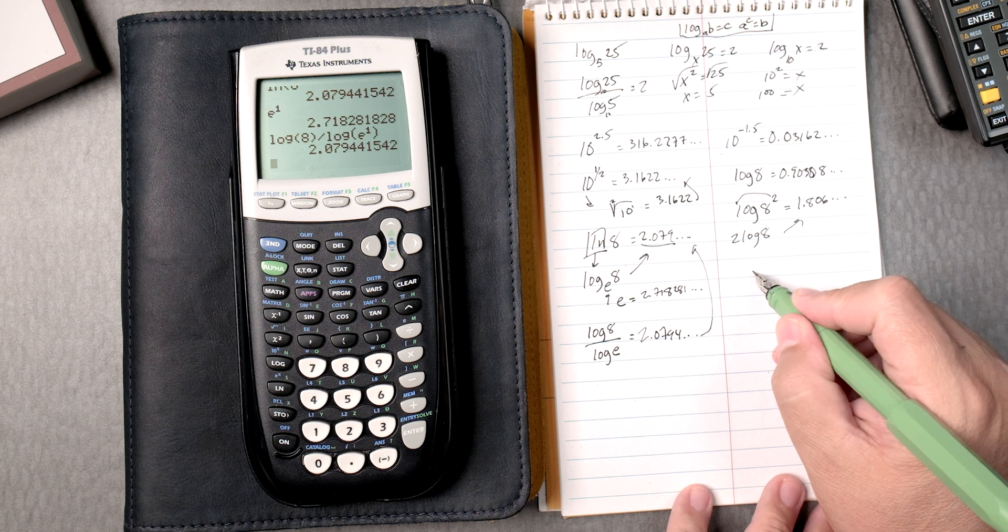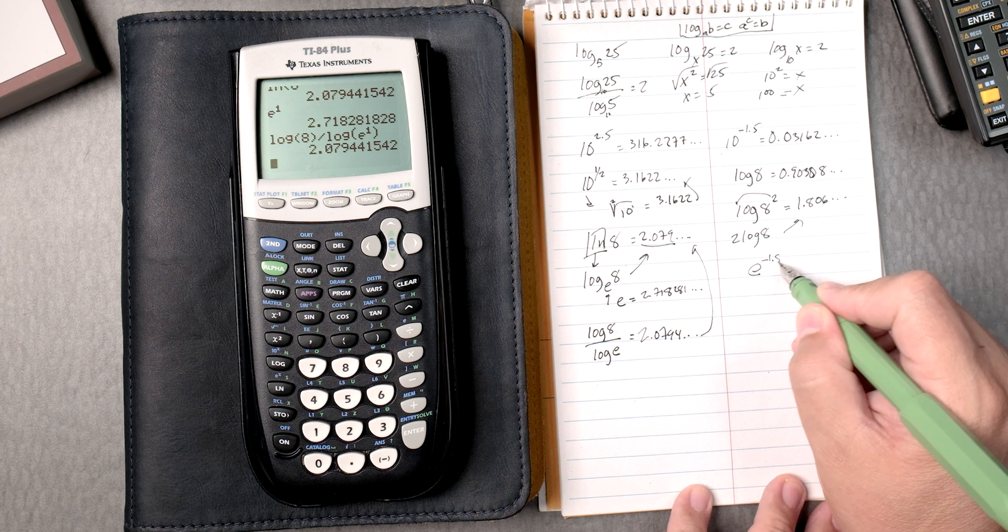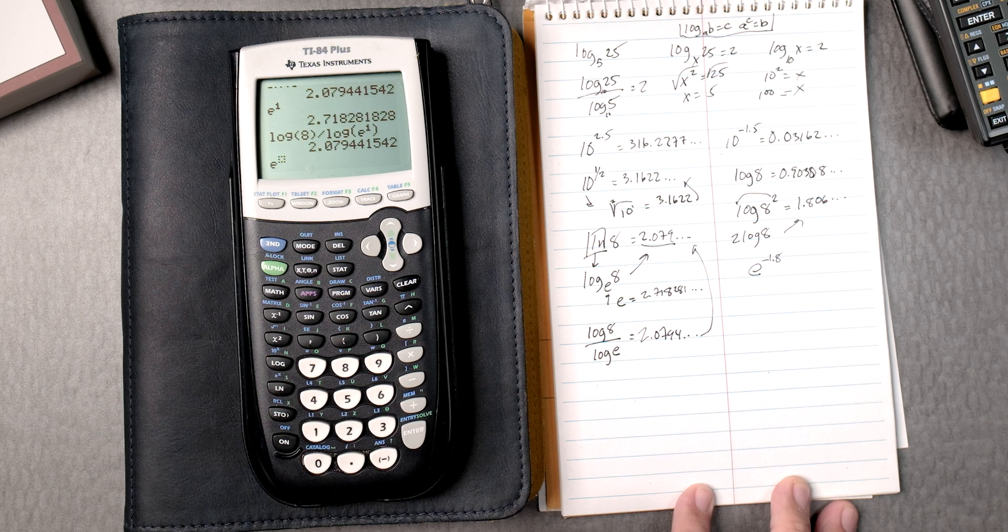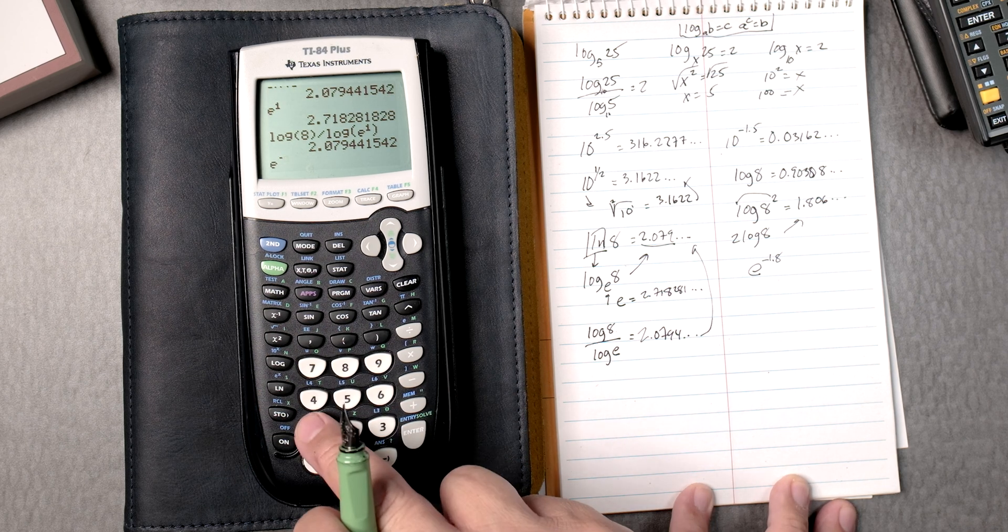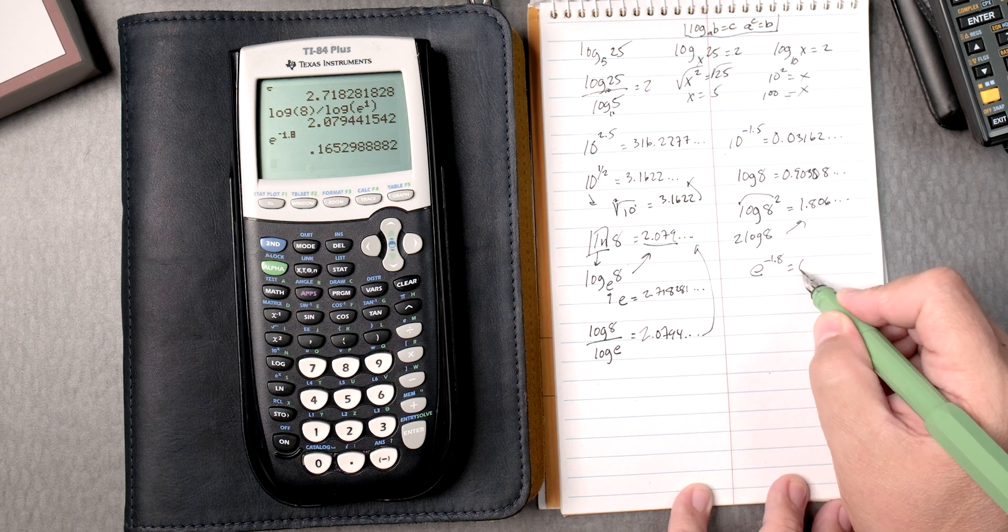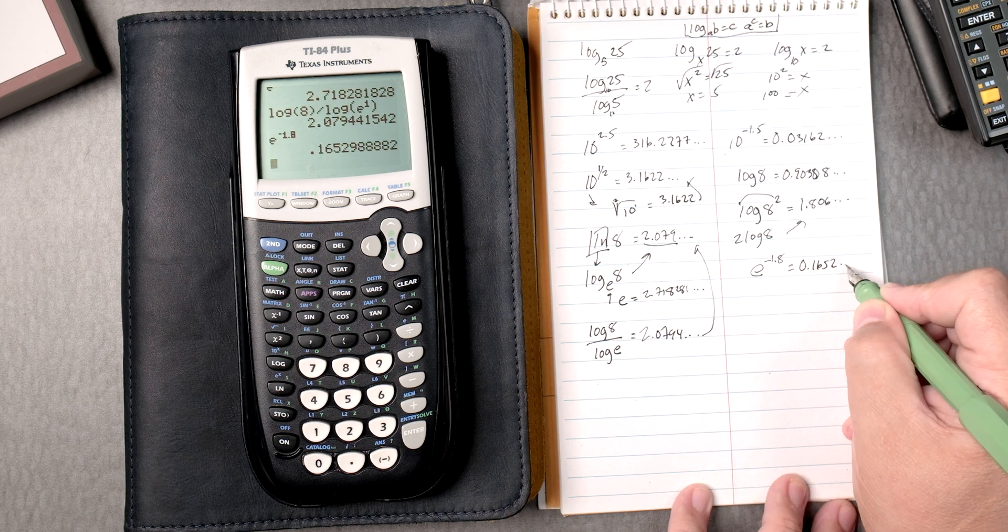So what about e to the negative 1.8? Well, second, natural log, negative, not subtraction, 1.8, enter. That's going to give you 0.1652, and so forth.